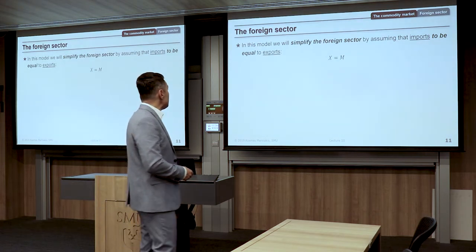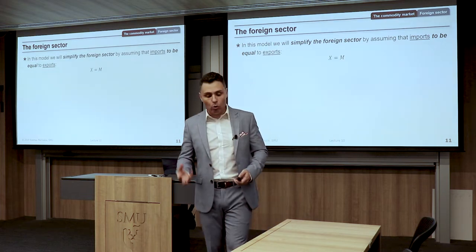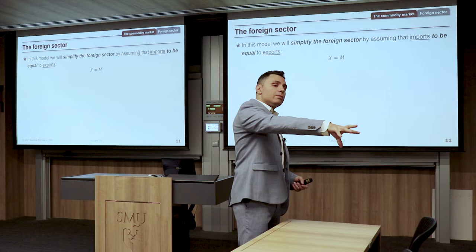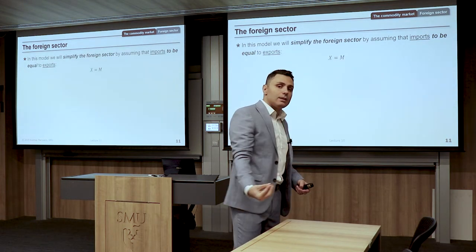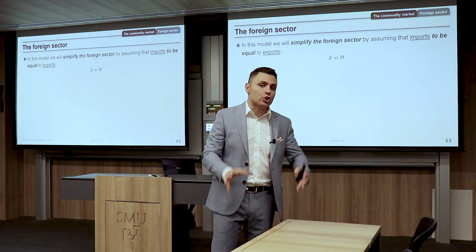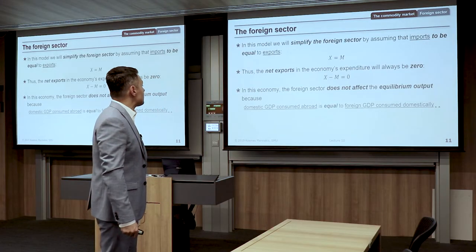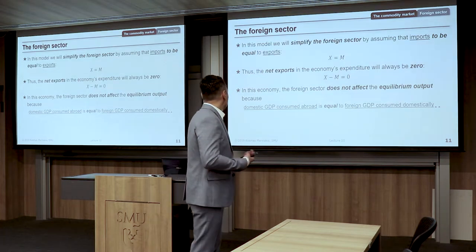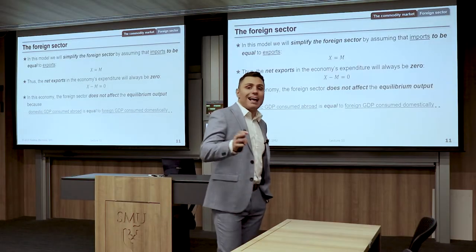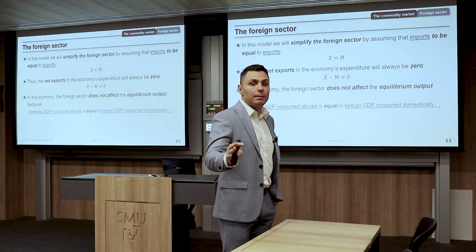The foreign sector will be simplified by assuming that imports equal exports: X equals M, so X minus M equals zero. We have no trade deficit or trade surplus. Net exports in this economy will always be zero. The foreign sector does not affect the equilibrium output because domestic GDP consumed abroad equals foreign GDP consumed domestically, so it drops out of the equilibrium calculation.